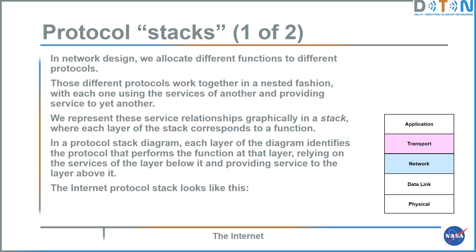For example: domain name service at the application layer, UDP at the transport layer, IP at the network layer, FDDI at the data link layer running over optical fiber. Each FDDI frame has an FDDI header and its payload, which is an IP packet. The IP packet has an IP header and its payload is a UDP datagram. The UDP datagram has a UDP header and its payload is the DNS message.